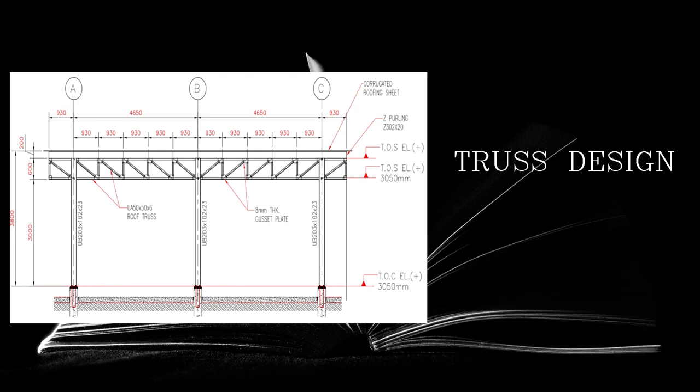We all know that trusses are only subjected to axial loads, so a truss member can only be subjected to tension or compression. What you have to do is first analyze your truss member. We already know from structural analysis classes that you can analyze trusses using the joint method or the section method, especially when the truss is statically determinate. This video will focus on the design of tension and compression members.